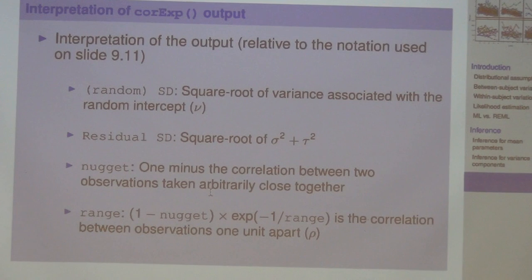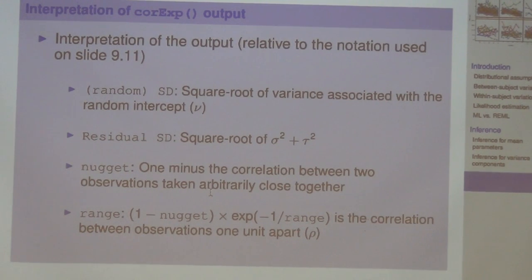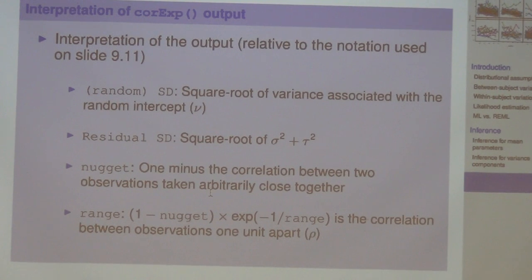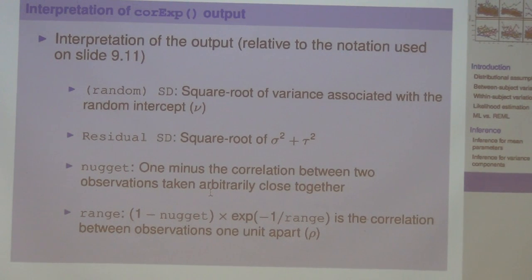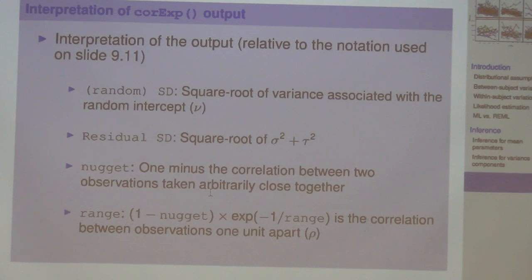That is actually much more interpretable than just thinking of it as a proportion. When I look at the variogram, I do think about the relative proportion accounted for by tau squared versus sigma squared in my notation. But that's not what the nugget estimate is telling me.